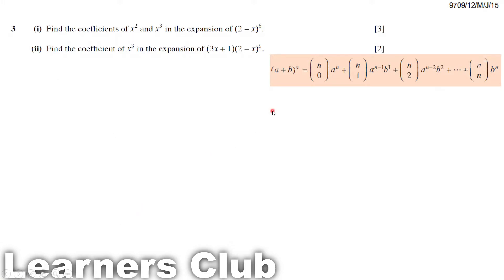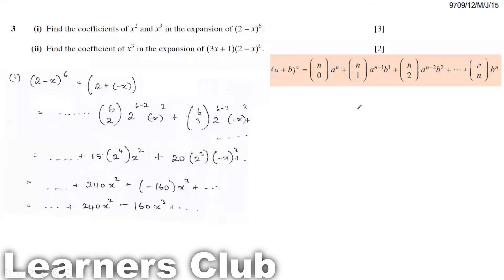I've used the binomial formula here. We don't have to expand the entire term because we only require x squared and x cubed. First, what I'm doing is changing this term: 2 minus x can be taken as 2 plus minus x, whole to the power 6.